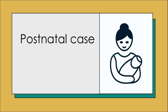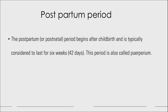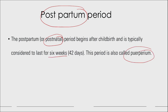In this video we are going to see about common topics discussed in postnatal case presentation. First we focus on the mother related questions. The first question is: what is the postpartum period? The postpartum period, otherwise called as postnatal period, begins soon after childbirth and is typically considered to last for 6 weeks or 42 days. This period is also called puerperium, from childbirth to 6 weeks after childbirth.